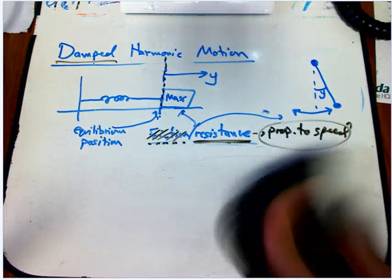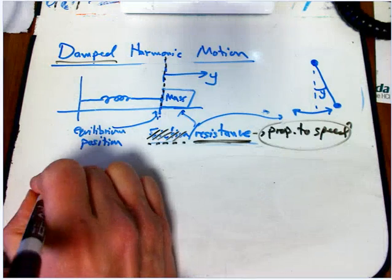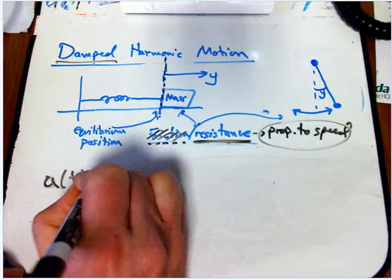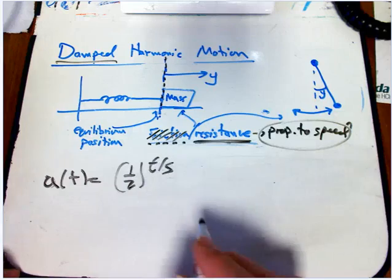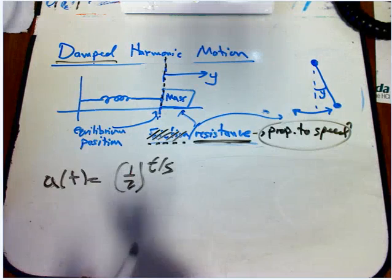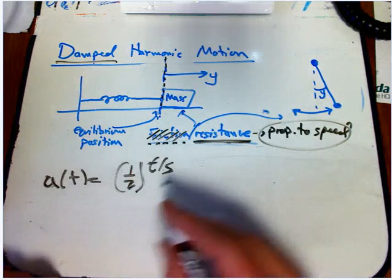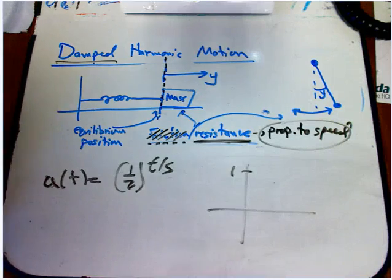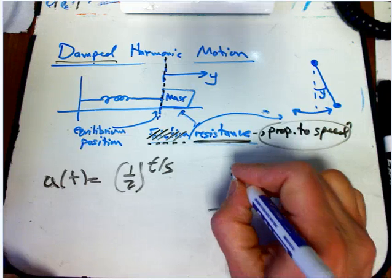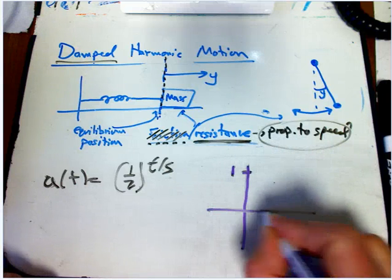It shouldn't be remotely surprising that that kind of function would be like a of t is one half to the t over five. We know exactly how to create a function like that.